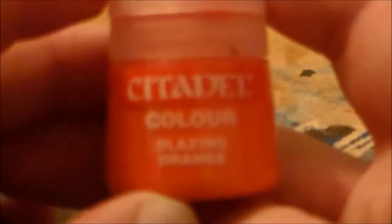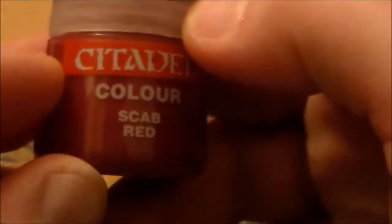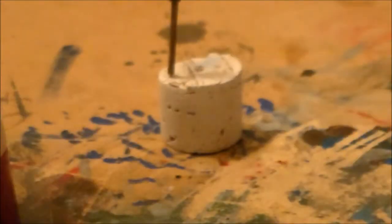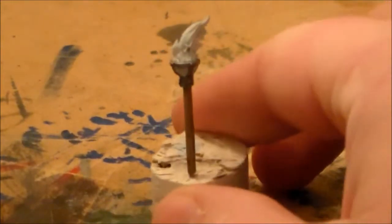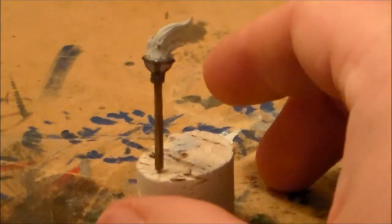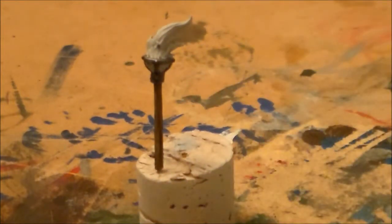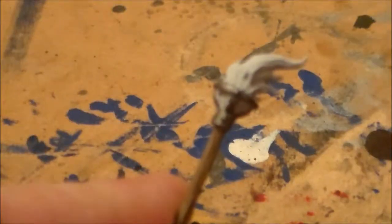The four colors I'm going to be using will be sunburst yellow, blazing orange, scab red, and then finally just a bit of chaos black. Hopefully this will work out and help you a little bit.